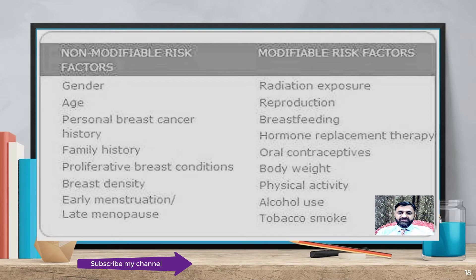To summarize, non-modifiable risk factors include gender, age, personal breast cancer history, family history, proliferative breast conditions, breast density, early menstruation, and late menopause. Modifiable risk factors include radiation exposure, reproduction, breastfeeding, hormone replacement therapy, oral contraceptive pills, body weight, physical activity, alcohol use, and tobacco smoking.